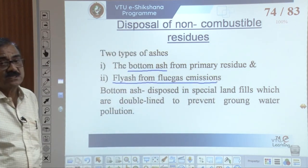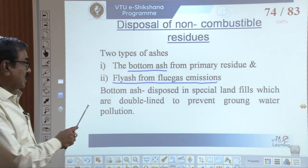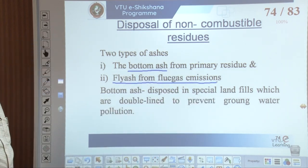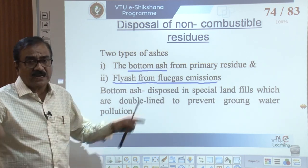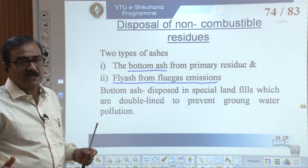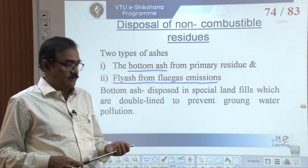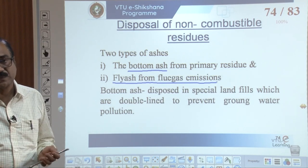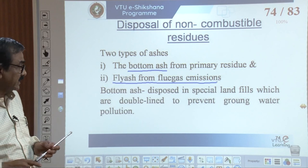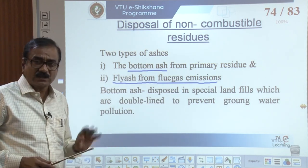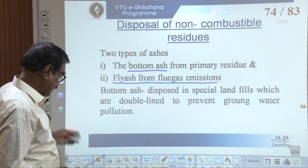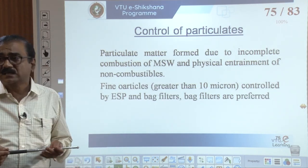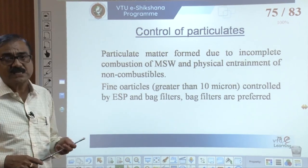Some fly ash is also collected from the baghouse as seen in the figure. Bottom ash is disposed of in special landfills which are double lined to prevent groundwater pollution — in India we are also now making lined municipal solid waste landfill sites using geo-impermeable membranes which are not permeable in nature, preventing leachate from entering the ground and avoiding groundwater pollution. Control of particulates is the next item and will be discussed in the next class.